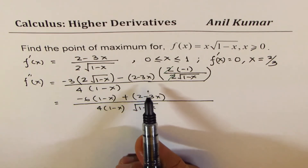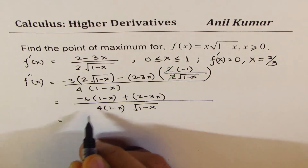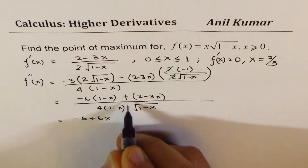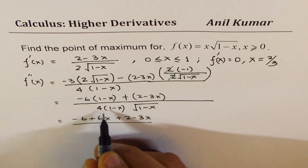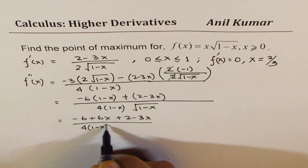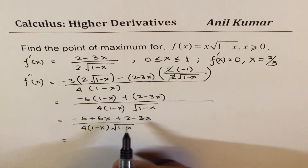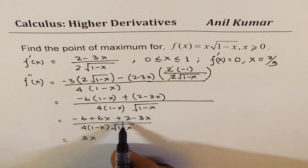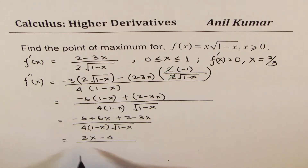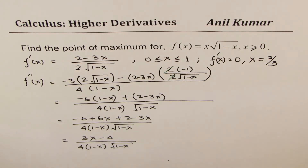Opening and combining like terms: the numerator becomes −6(1−x) + (2−3x), which expands to −6 + 6x + 2 − 3x = 3x − 4. So the second derivative simplifies to (3x − 4) / (4(1−x)√(1−x)). That is simplified enough.